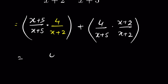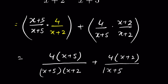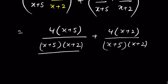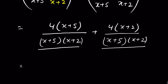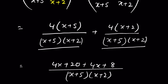This gives us: 4 times (x+5) upon (x+5)(x+2), plus 4 times (x+2) upon (x+5)(x+2). Now these have a common denominator, so we can write them together over (x+2)(x+5) and add the numerators.